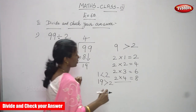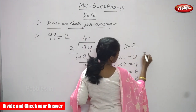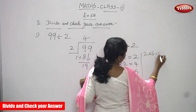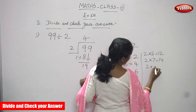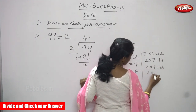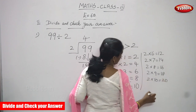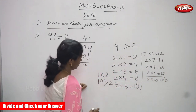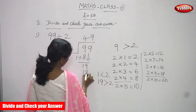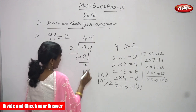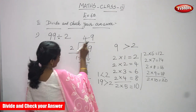2 fours are 8, 2 fives are 10, 2 sixes are 12, 2 sevens are 14, 2 eights are 16, 2 nines are 18, 2 tens are 20. You must stop up to 2 nines are 18. So 9 is the quotient. You must write it in the 1s place. This is the 10s place and this is the 1s place. So 2 nines are 18.